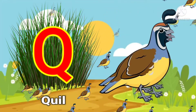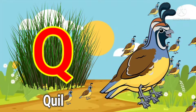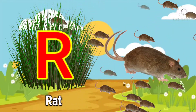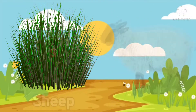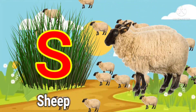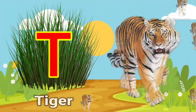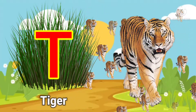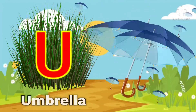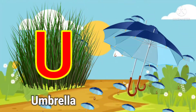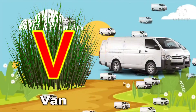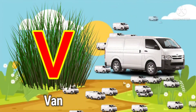Q for coil, R for red, S for sheep, T for tiger, U for umbrella, V for vein.